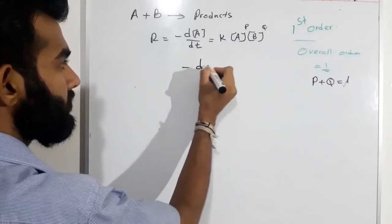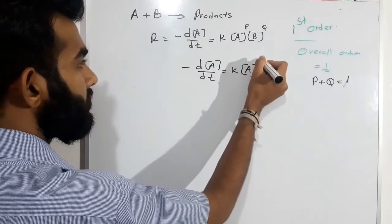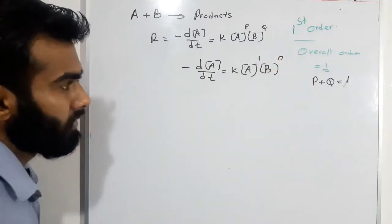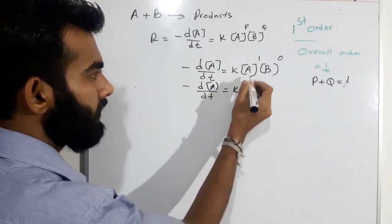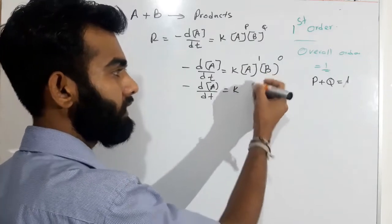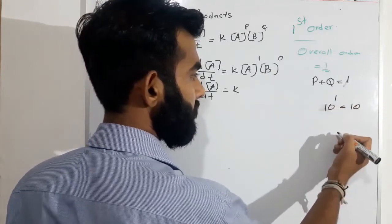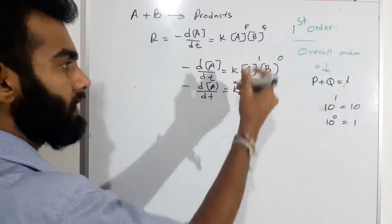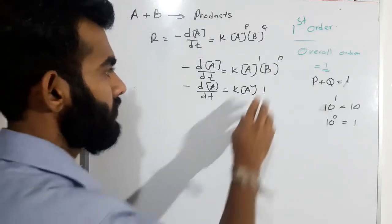I will write down this equation: dA divided by dt equal K times A to the power 1 and B to the power 0. I can simplify: minus dA divided by dt equals K. The power of something is 1, we keep it as is. For example, 10 to the power 1 is 10, and 10 to the power 0 is 1. Likewise, A to the power 1 is A, and B to the power 0 is 1. Now I have simplified my equation.